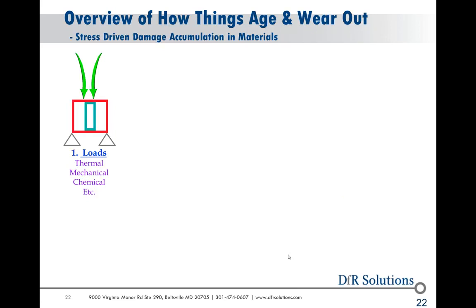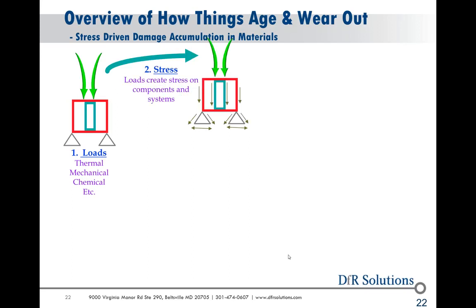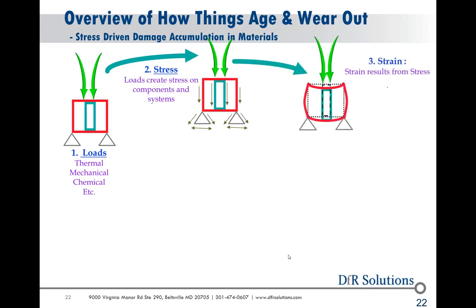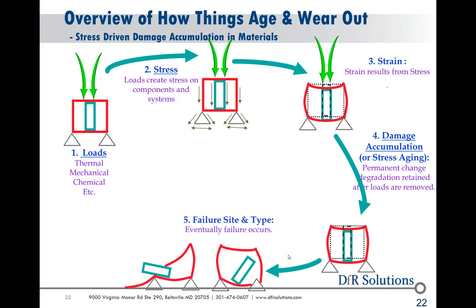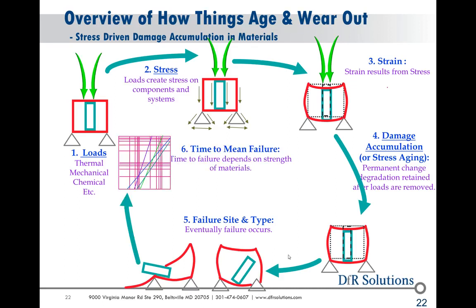How do things age and wear out? Everything sees a load — thermal, mechanical, chemical, and so on. Every load creates a stress, and that stress creates a strain. That creates damage accumulation over time, which eventually leads to failure. These are things that can be calculated and predicted. Once you understand the input variables for these types of failures, you can create viable plots and model those failure mechanisms.